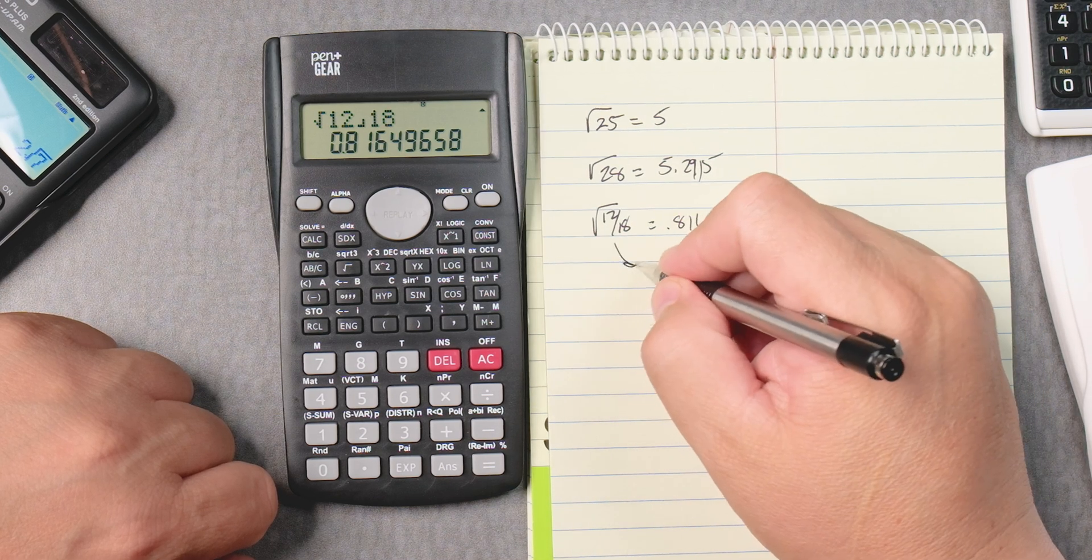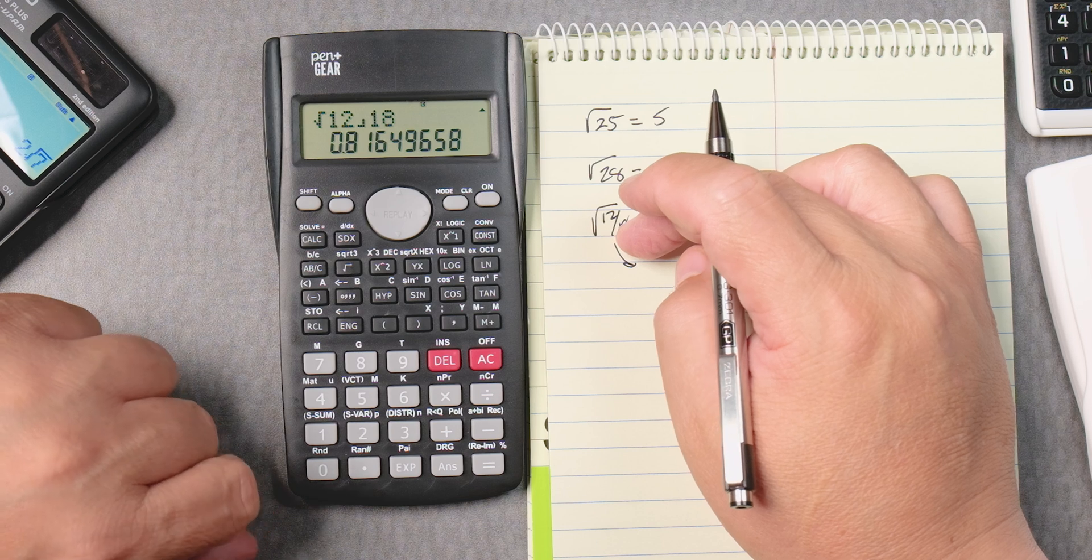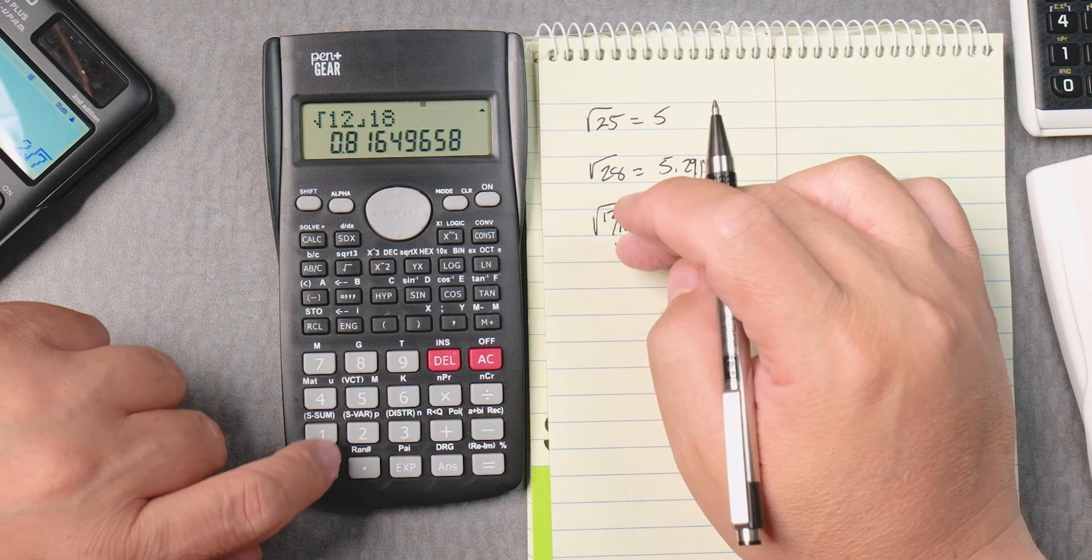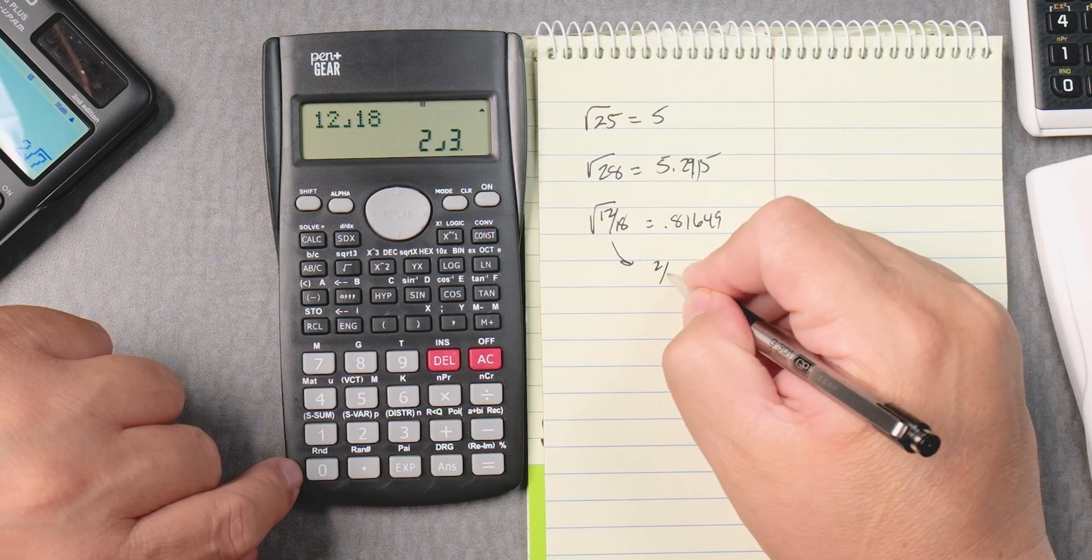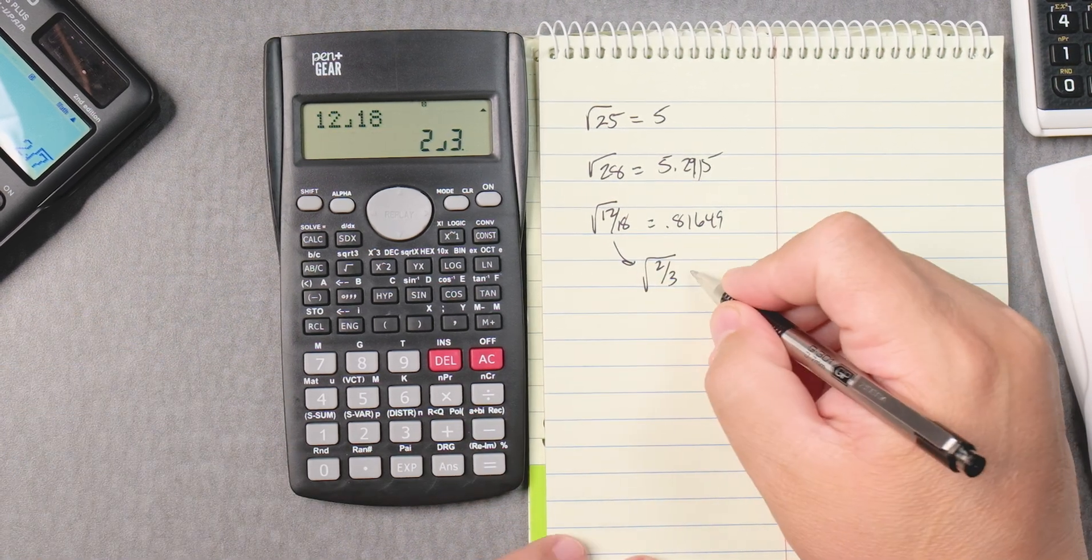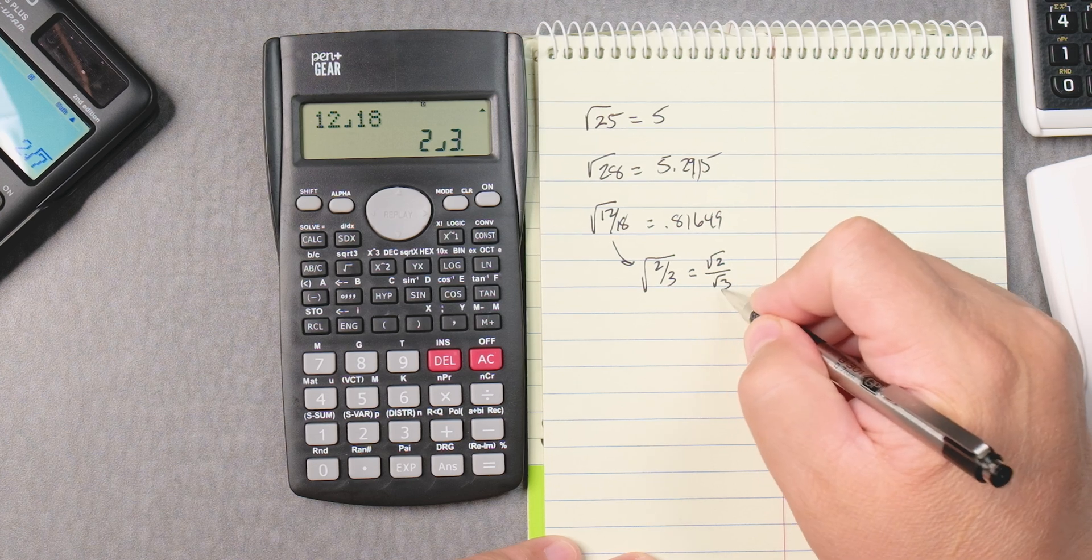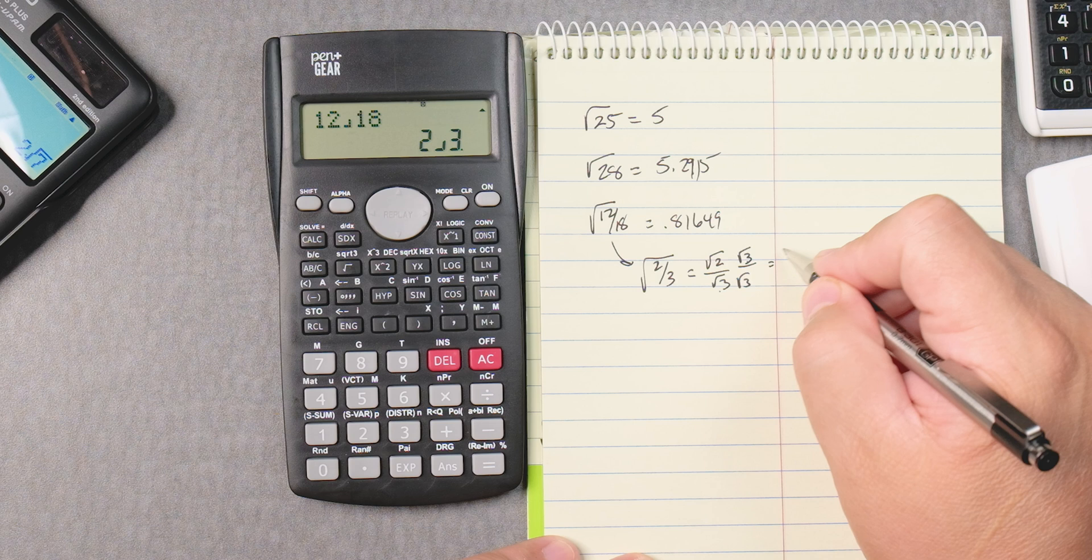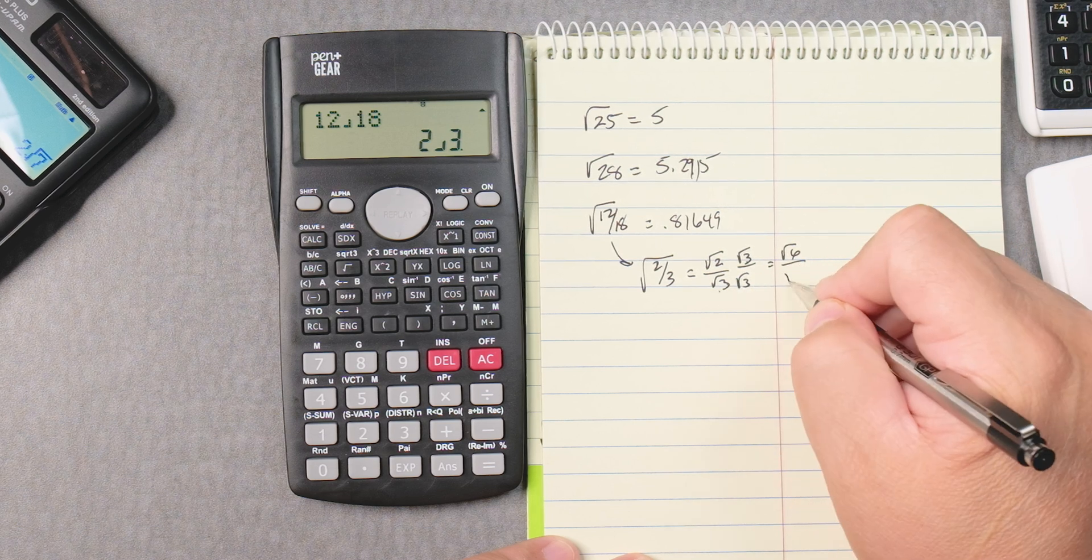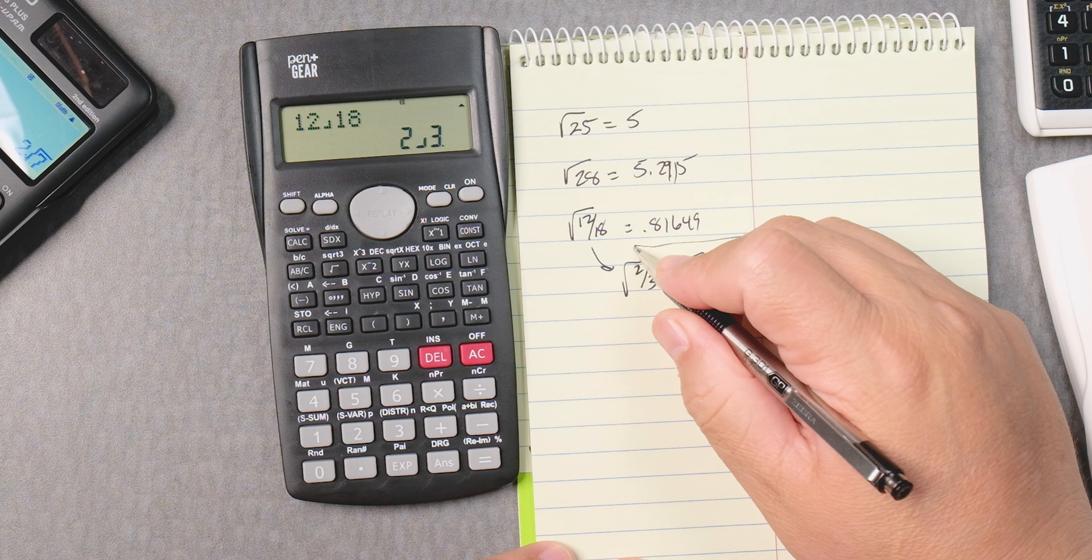You can, if you wanted to, let's say you wanted to reduce this first, right? So you can say 12 ABC 18 equals 2 thirds. The square root of that, then do it by hand. Square root of 2 over square root of 3. You can't have a radical on the bottom, so you rationalize it. 2 times 3 is 6. 3 times 3 is 9. Square root of 9 is 3, which is the same answer.